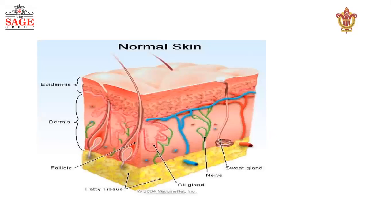This is the normal structure of the skin. Skin is generally divided into three layers: the epidermis, the middle layer called dermis, and the innermost layer called the subdermal or hypodermal layer. The epidermis is the outer layer, which is further subdivided into five layers: stratum corneum, stratum granulosum, stratum malpighium, stratum lucidum, and stratum spinosum.